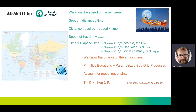We know the physics of the atmosphere — the primitive equations, which is fluid dynamics on a rotating sphere. Then there are subgrid processes, which are typically parameterised: radiative transfer, cloud cover, convection, rain, snow, orography. All that gets written down as equations. The total tendency T is the dynamics — large-scale fluid evolution — plus all the physics, plus a little epsilon term. This epsilon is a random number with a mean of zero that slightly increases or decreases any one of those bits of physics. That's what we do in forecasting with stochastic physics.